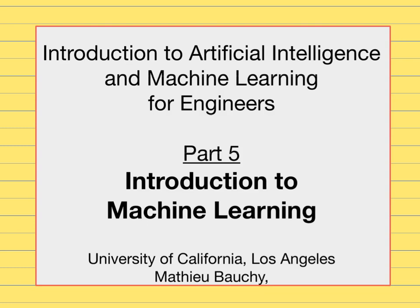Hello and welcome to this fifth lecture of the Introduction to Artificial Intelligence and Machine Learning for Engineers class. In the previous lectures, we mostly talked about artificial intelligence and how to find the best sequence of actions in order to achieve a goal as efficiently as possible.